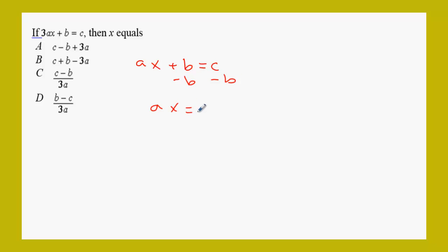You get ax equals c minus b. Then, the relationship between the a and the x, you need to get rid of the a. Oh, I'm sorry. There's 3 here and there's 3 here. Okay. The relationship between 3a and x is multiplication. The opposite operation of that is division.